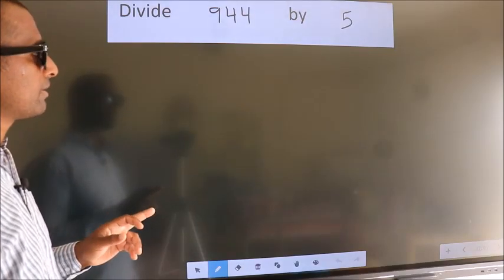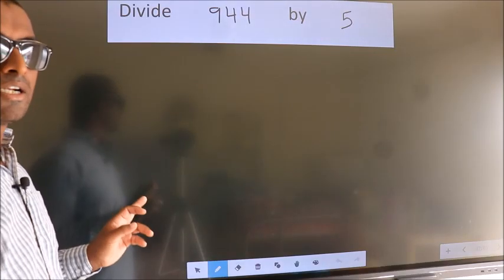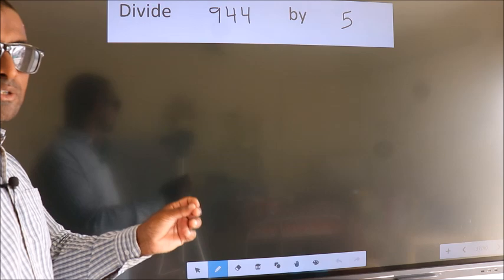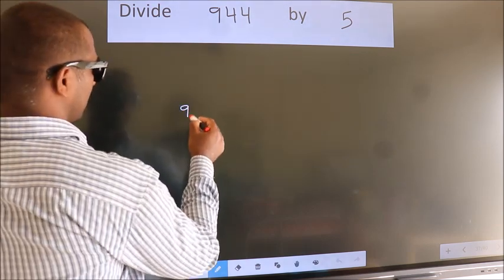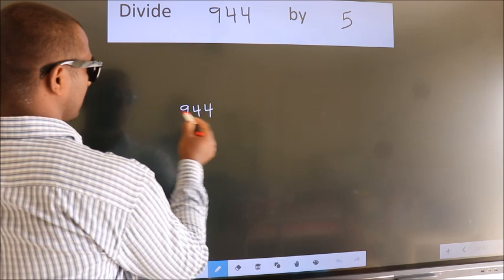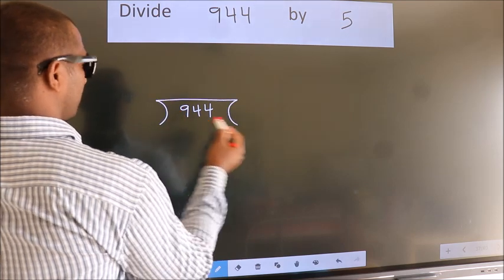Divide 944 by 5. To do this division, we should frame it in this way: 944 here, 5 here.